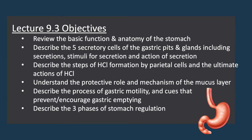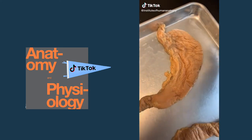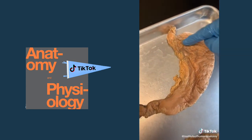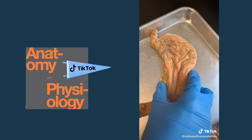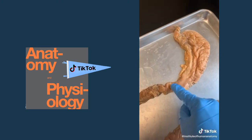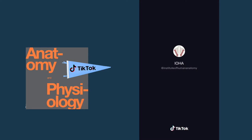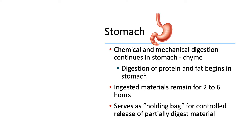We'll begin by reviewing the basic function and anatomy of the stomach. Did you know that your stomach actually moves and churns digested material? As you chew and swallow down the esophagus, food enters the stomach, gets bathed in acid, and the stomach moves it around like a cement mixer, then slowly releases it through the pyloric sphincter into the small intestine to be absorbed. So, as we just learned, both chemical and mechanical digestion occur within the stomach.